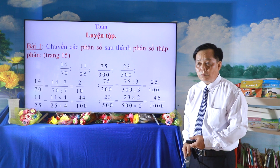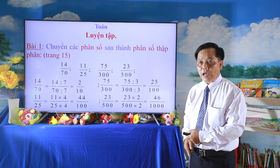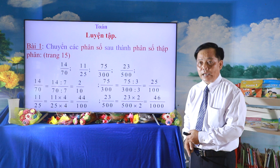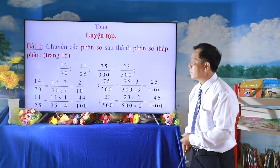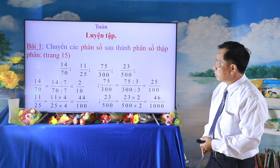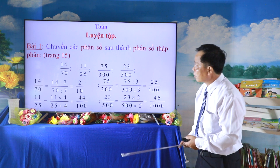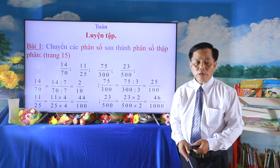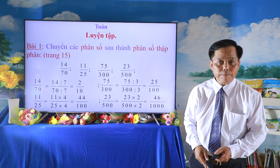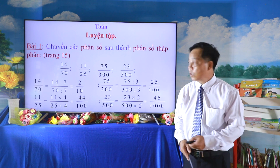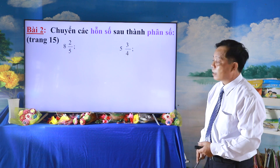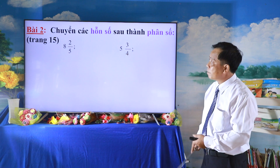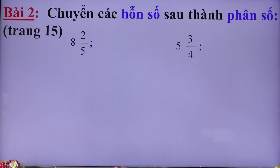Các em có đúng kết quả với thầy không? Thầy tương đương các em có kết quả giống như kết quả thầy đã chiếu trên bảng. Các em vừa làm xong chuyển các phân số thành phân số thập phân. Bây giờ các em muốn chuyển hỗn số thành phân số như thế nào thì tiếp tục qua bài số 2: chuyển các hỗn số sau thành phân số: 8 và 2/5, và 5 và 3/4.